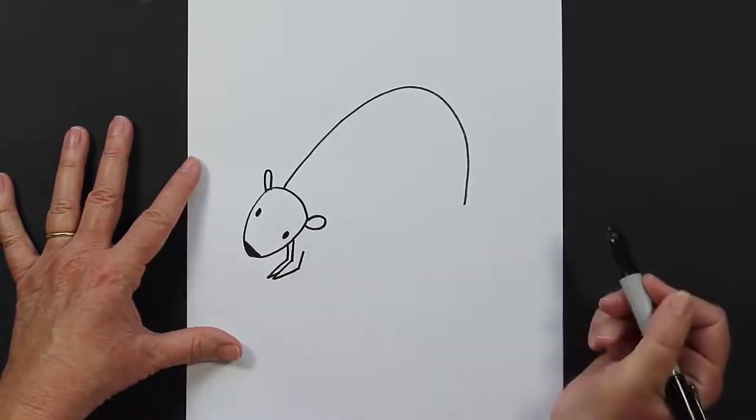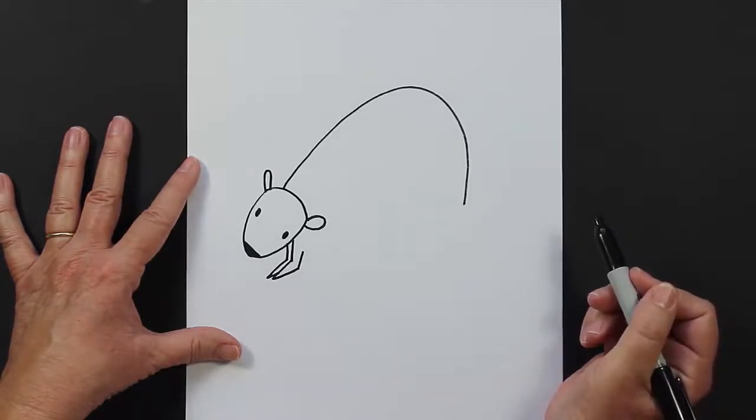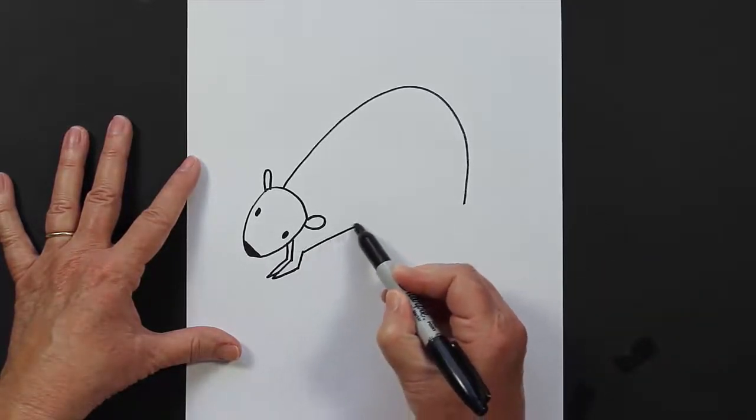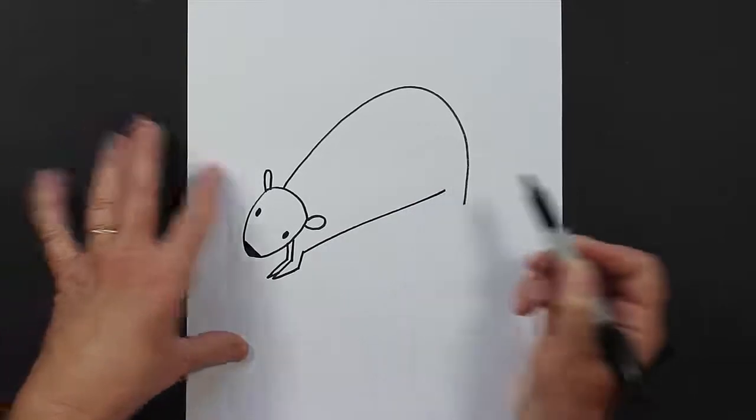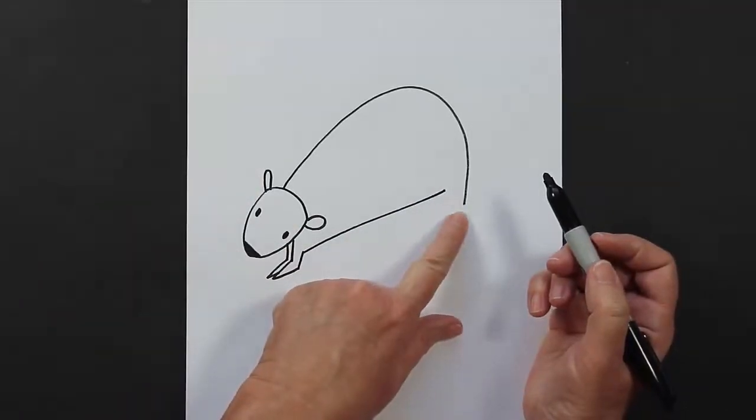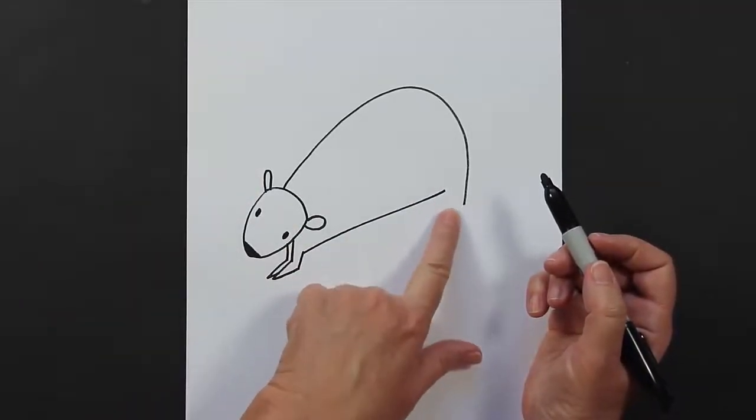Now we're going to come up with a straight line, and then we're going to make this straight line coming back like this. Now we're not going to go all the way though, because we need some room for his back feet.